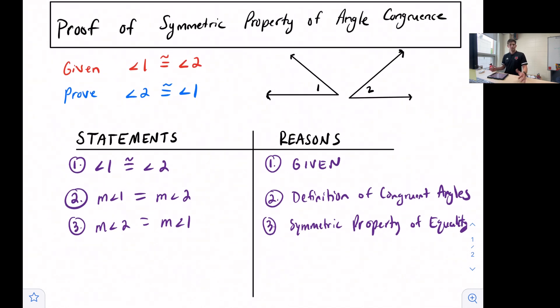Now our last statement: since the measures are equal, that means that the angles are congruent. And once again, that is our definition of congruent angles.